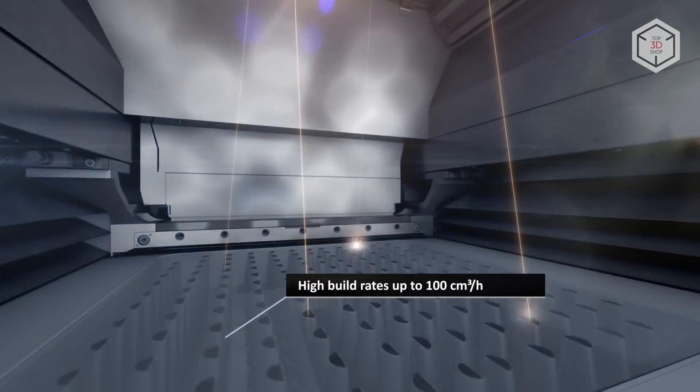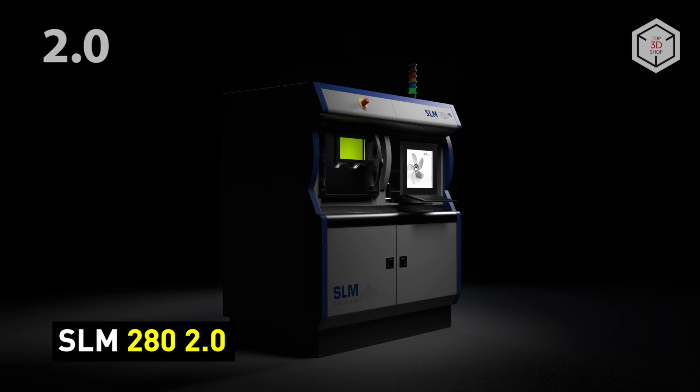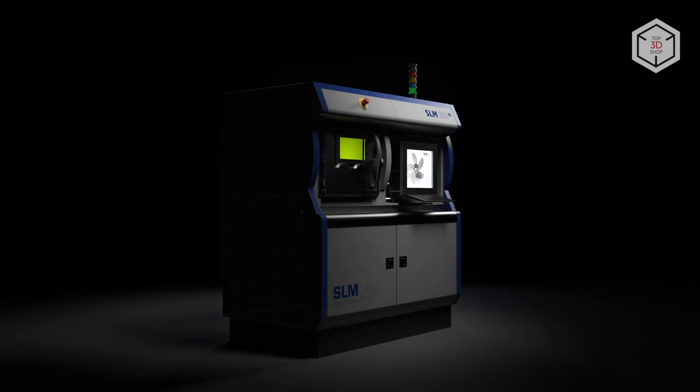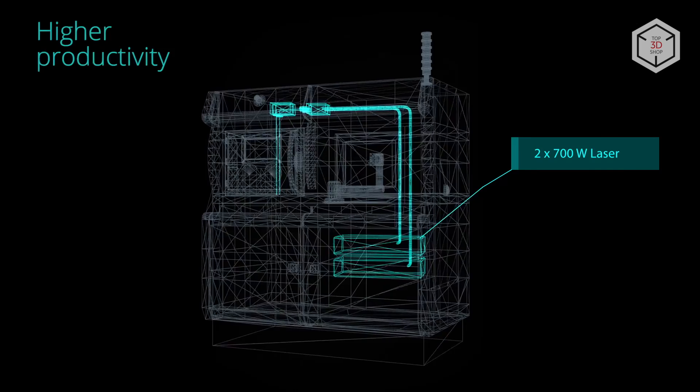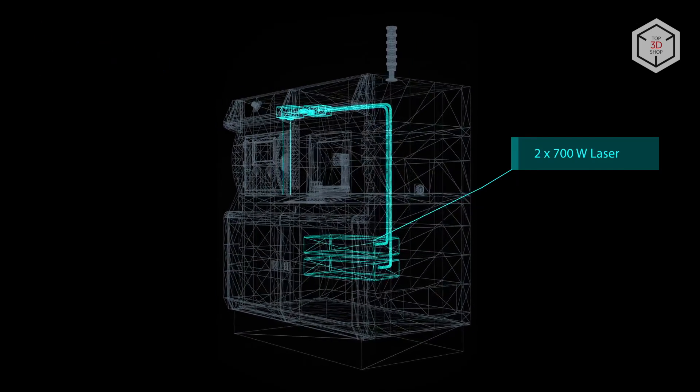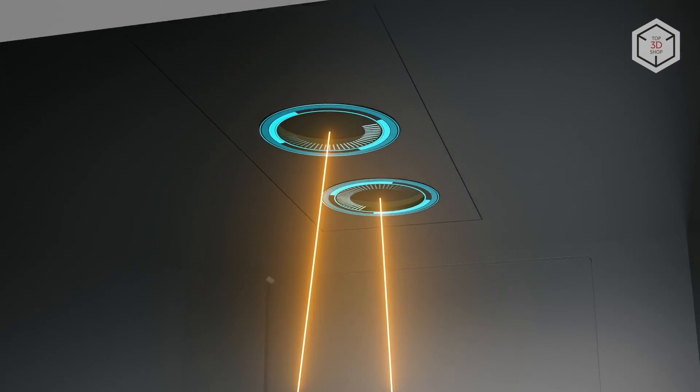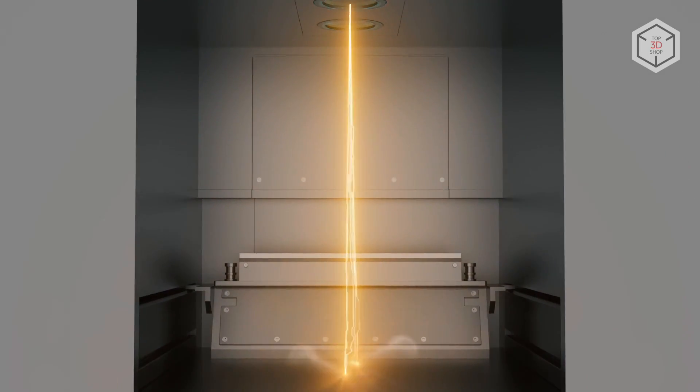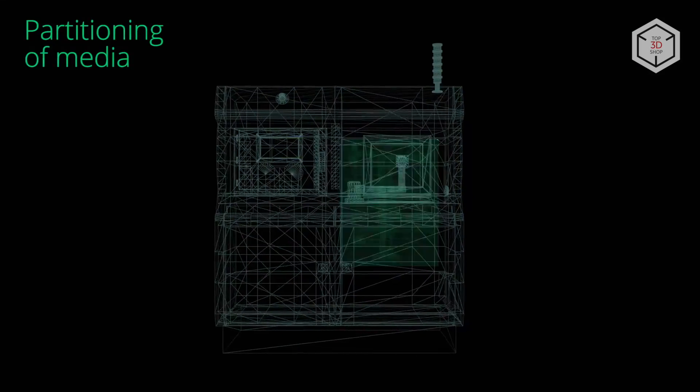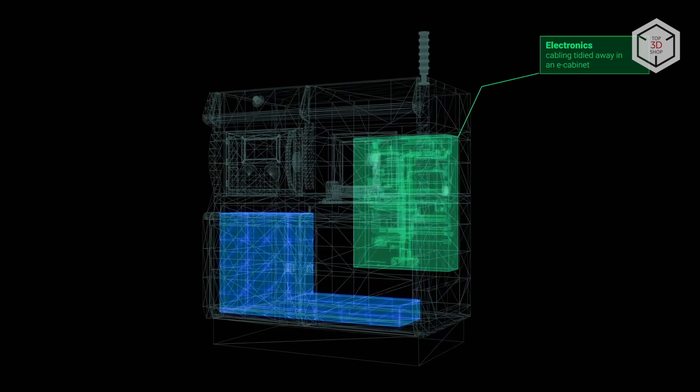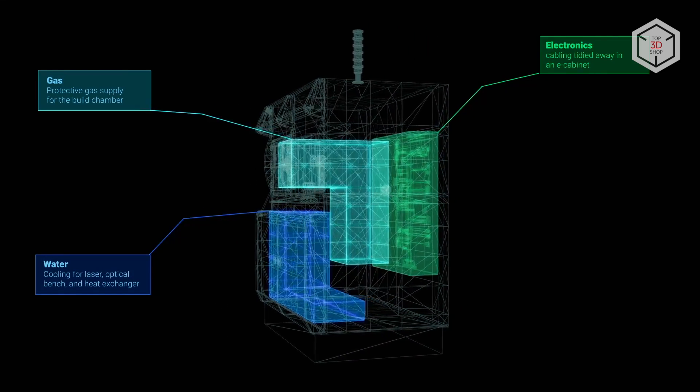The SLM280 2.0 is an industrial 3D printer made by the German company SLM Solutions. With a build volume of 280 x 280 x 365 mm, the device can print objects with the minimum layer height of 20 microns. The SLM280 2.0 model can be equipped with one or two fiber lasers, 700 watts each. Used for medium and high volume production of metal parts, the machine is compatible with a wide range of consumables, including pure metal powders and various alloys: aluminum, titanium, steel.